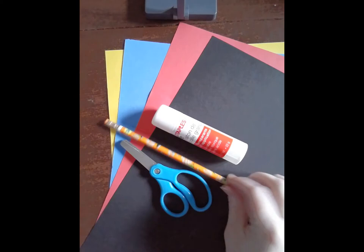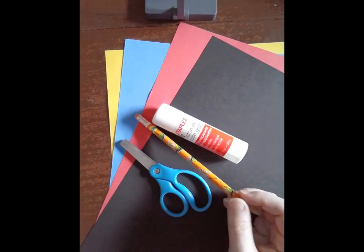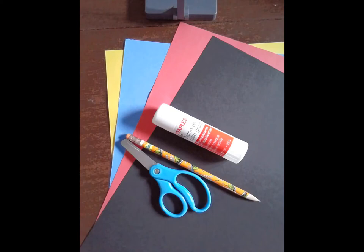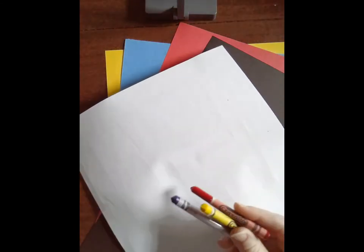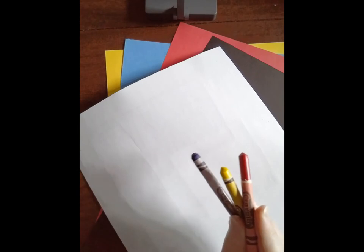If you don't have construction paper at home, you could just take a white paper and some crayons, draw some shapes overlapping each other, and then color in the shapes with the crayons. And that's fine.